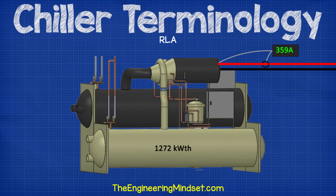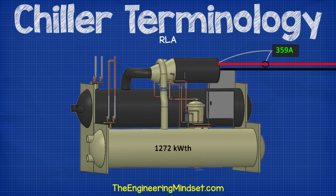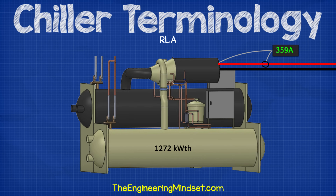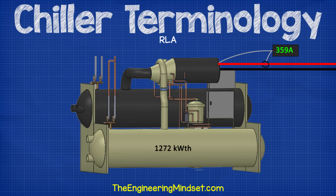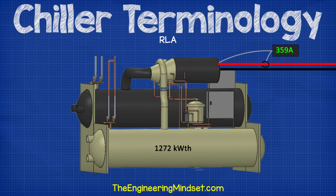Rated load amps, or RLA. RLA refers to the maximum amps drawn by the compressor's motor during operation. The RLA will vary depending on how much work the compressor has to do. If the RLA is exceeded, then the compressor motor can overheat and destroy itself. There are safety features built into the chiller's controls to measure and prevent this from occurring. For example, a 1,272-kilowatt rated centrifugal-type water-cooled chiller has an RLA of 359 amps, but the chiller will cut the power to the motor if it reaches 455 amps. This limit and value will vary between chillers and manufacturers.